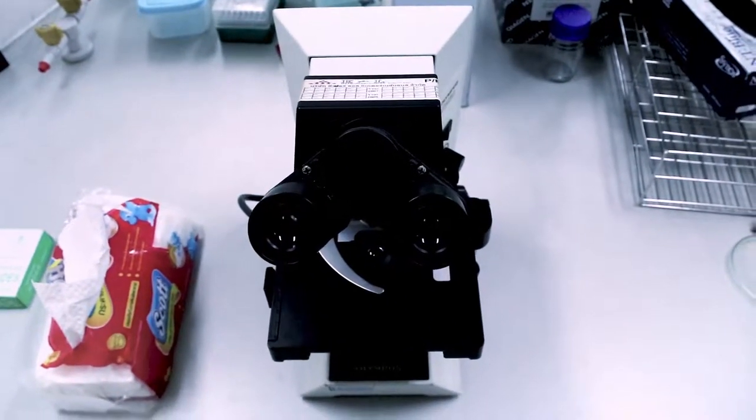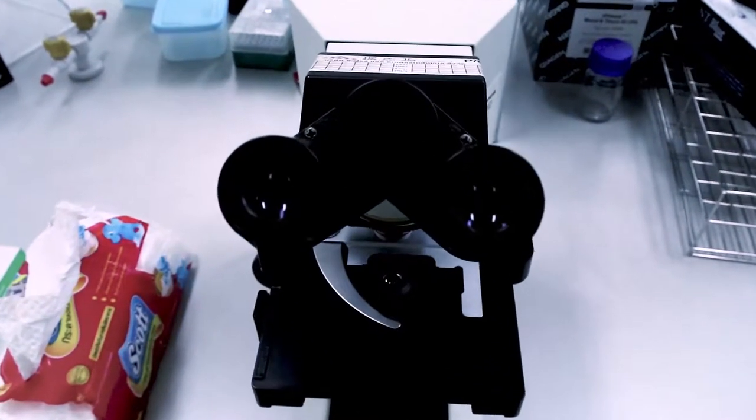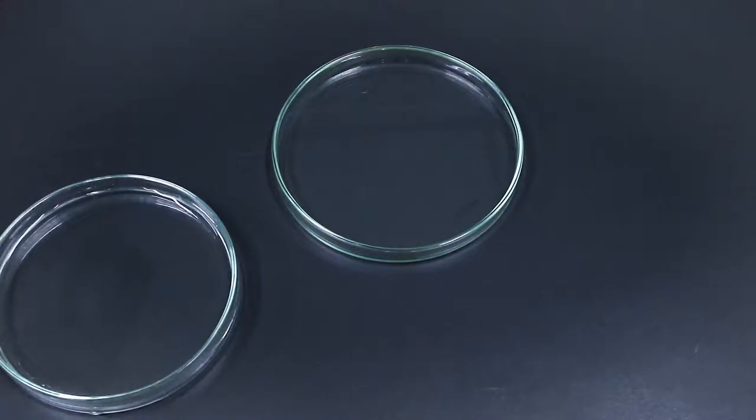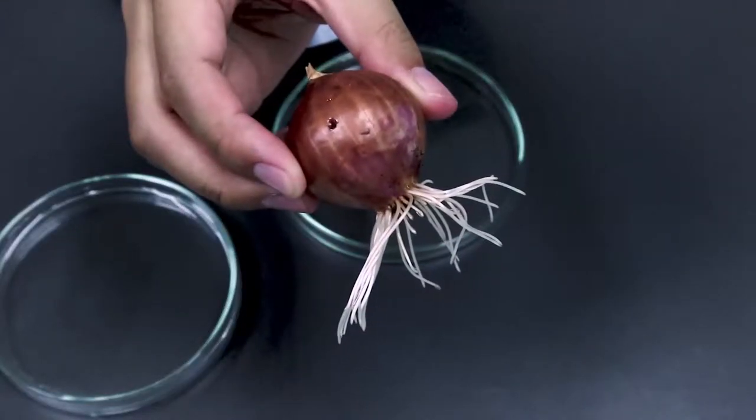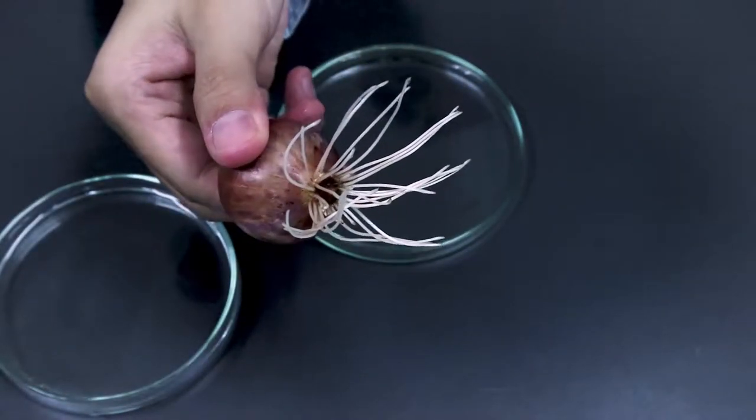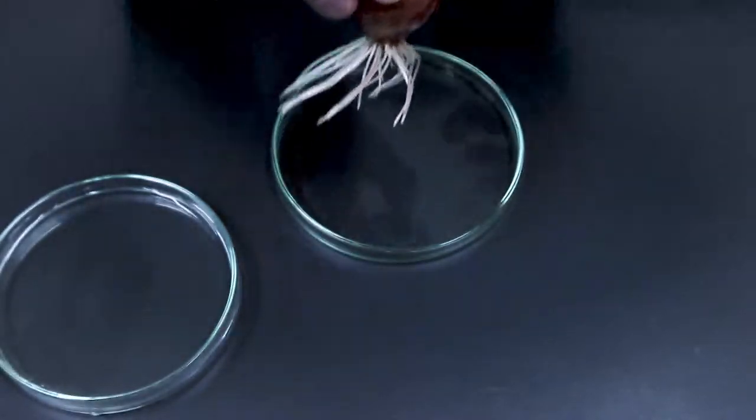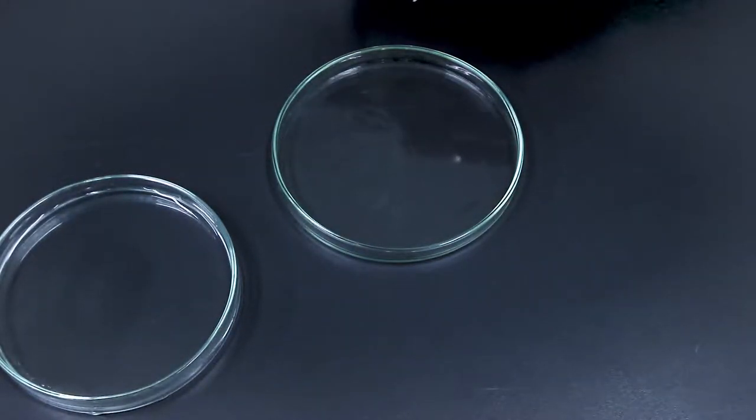So here the microscope, tissue paper, and we're going to start with providing you the root tips of the onion. Here's the onion that we have soaked the bottom of in water for two to three days.